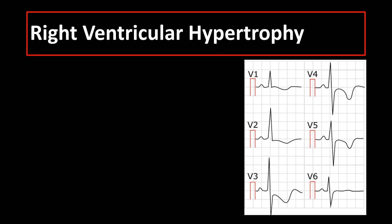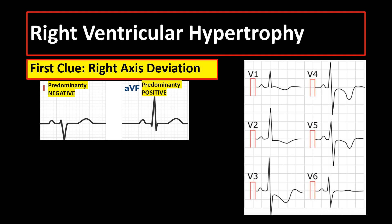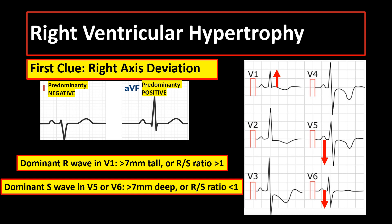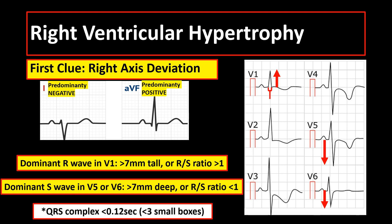How about right ventricular hypertrophy? You suspect right ventricular hypertrophy if there is right axis deviation — that is the first clue. Next, check the QRS complex changes: there is dominant R wave or positive deflection in V1 more than 7 mm tall, or an RS ratio of more than 1; or there is dominant S wave or negative deflection in V5 or V6 more than 7 mm deep, or an RS ratio of less than 1. Note that the QRS duration should be less than 0.12 seconds so that the changes are not due to right bundle branch block.